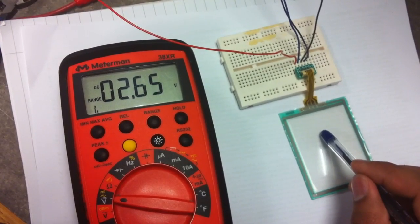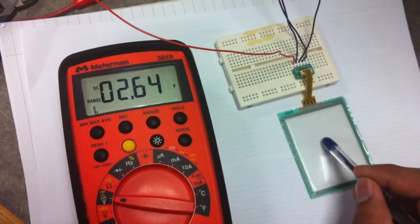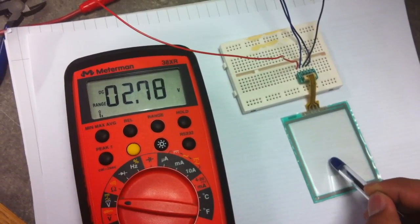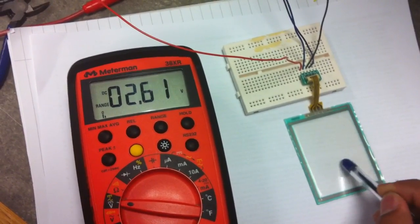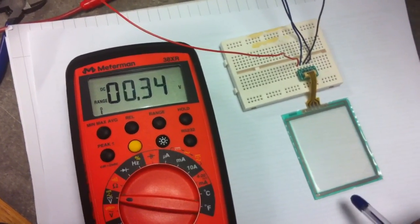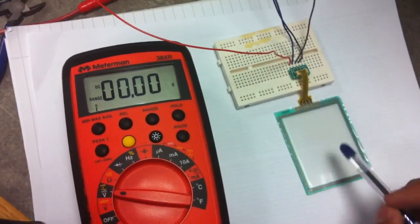The voltage drop is changing because my hand is varying. See, 2.6 something, because I change like this it changes. But here if we go on the x-axis it won't change. This is a resistive touchscreen test.